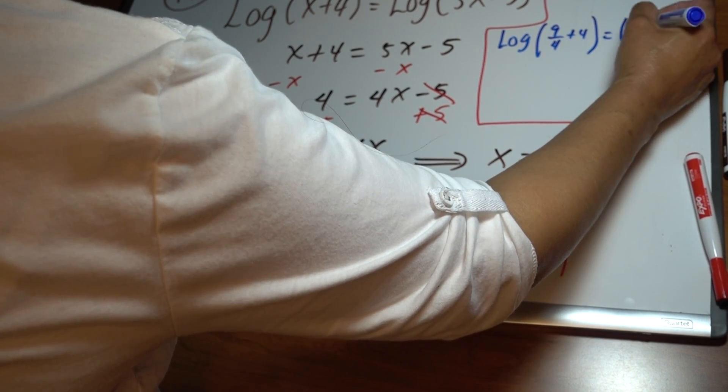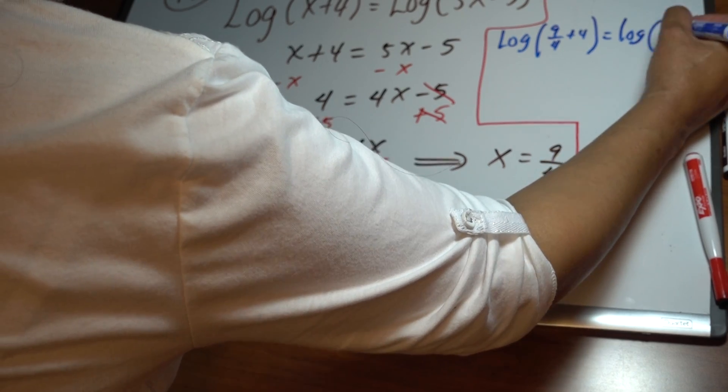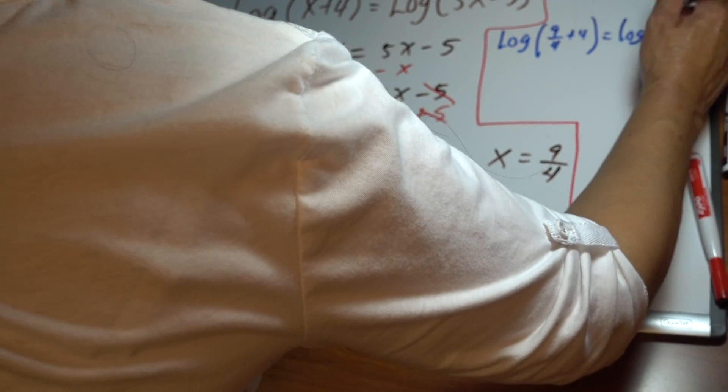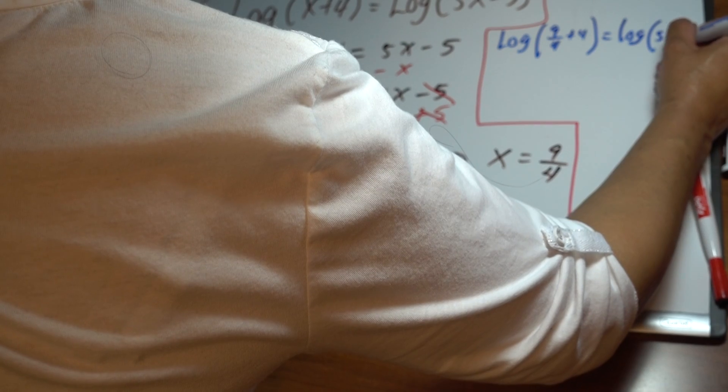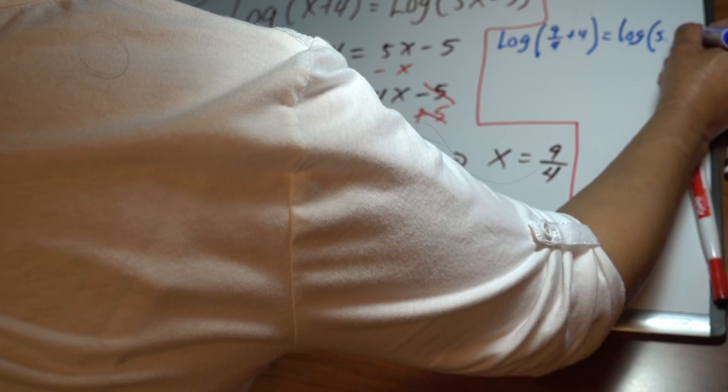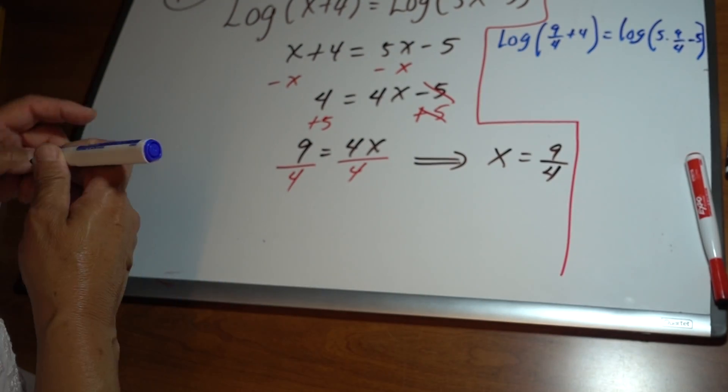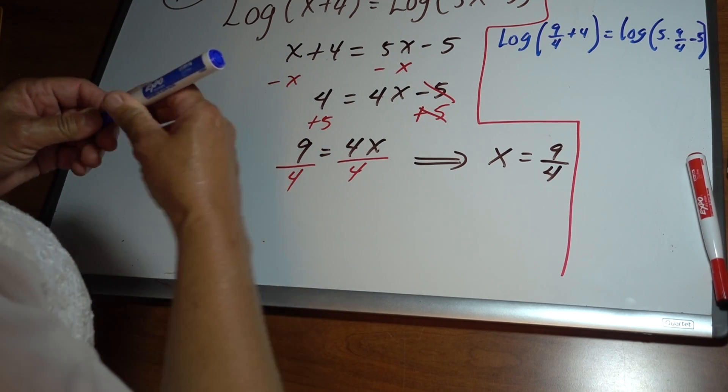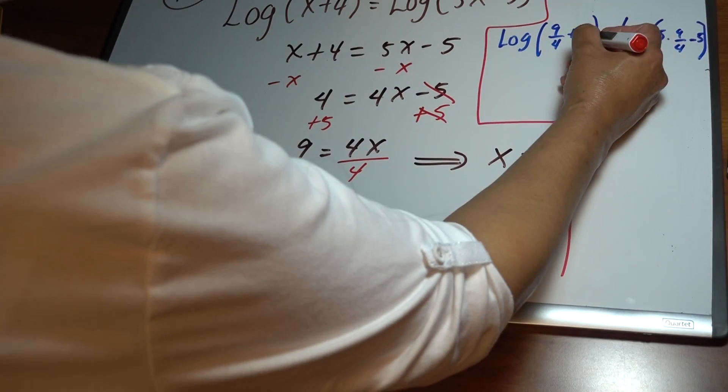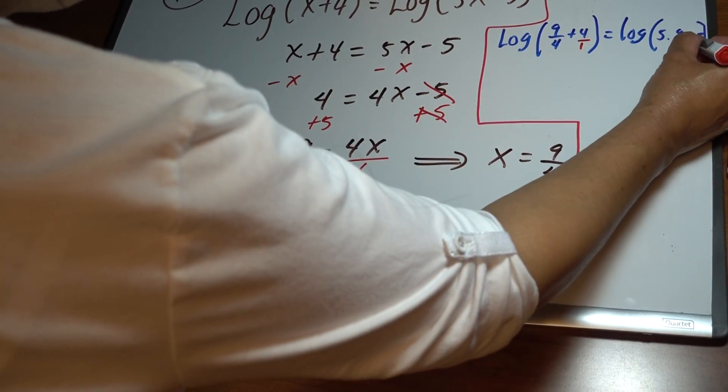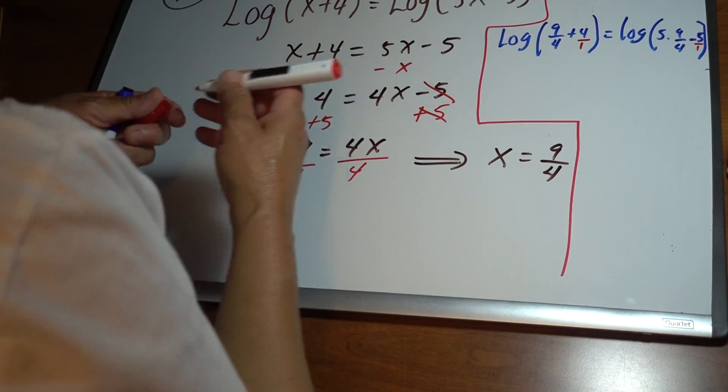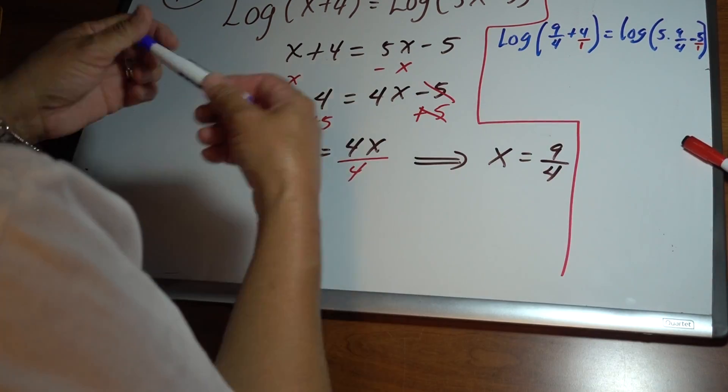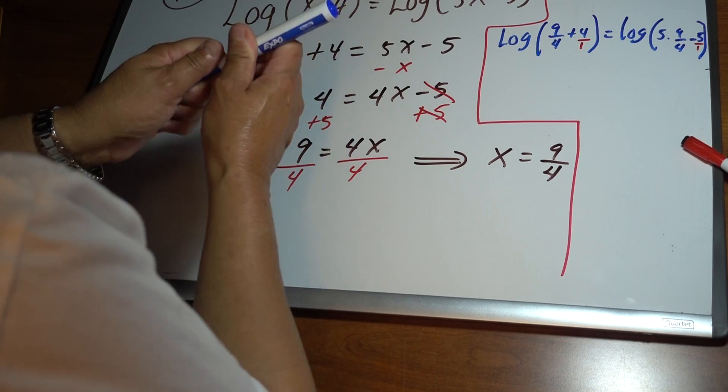...log of 5 times 9 fourths minus 5. In order to get the same denominator, we multiply by 4 top and bottom.